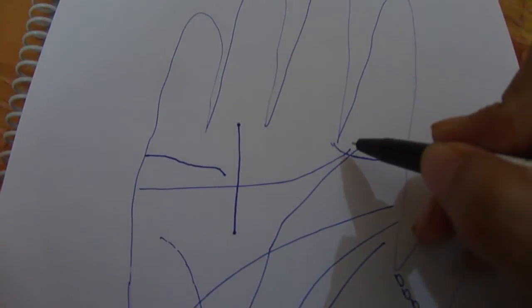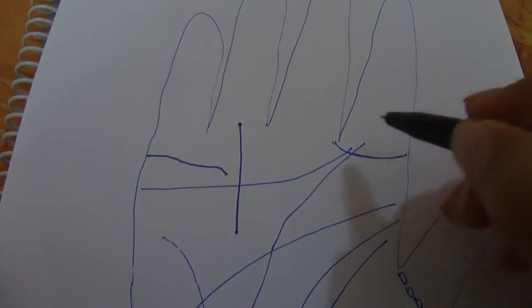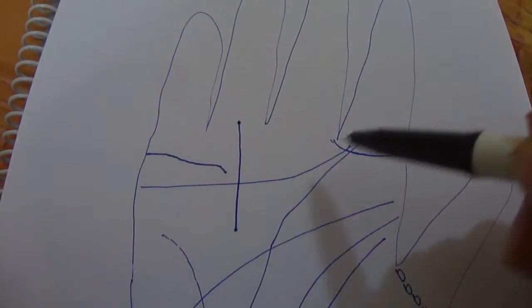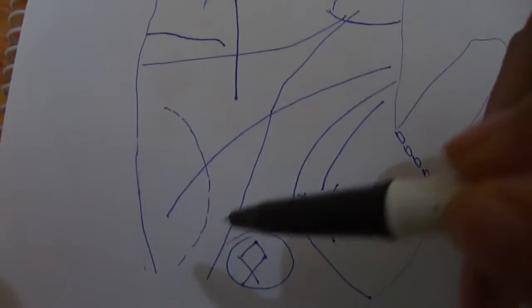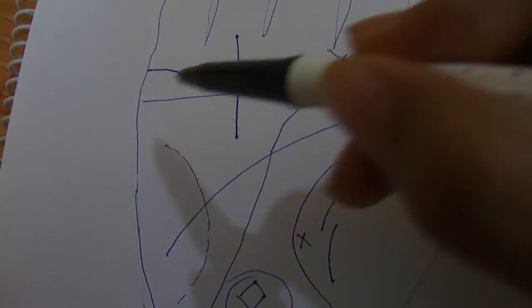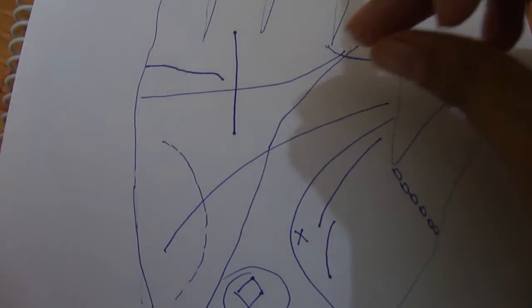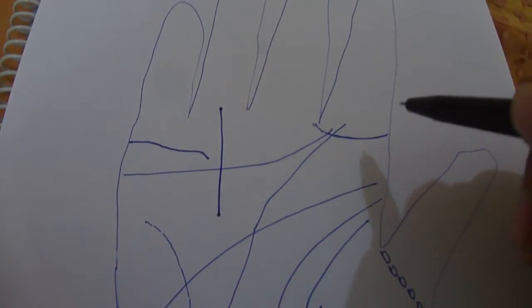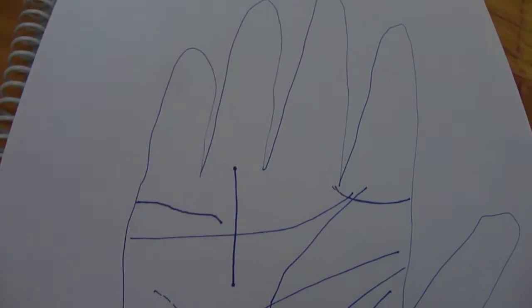Another interesting point which I did find in the hand was the presence of the ring of Solomon. I also saw that the heart line and the fate line, that is your job line and your heart line, both were getting attracted towards the ring of Solomon.